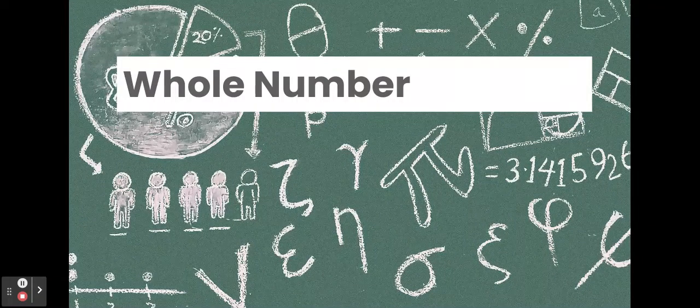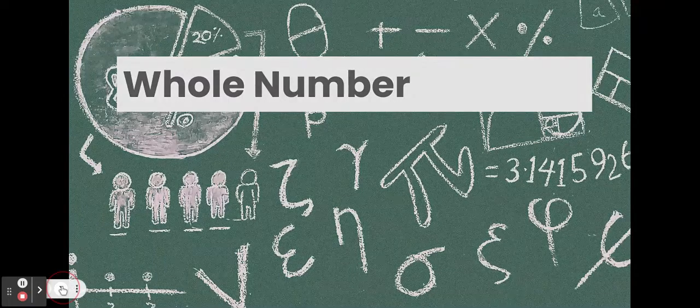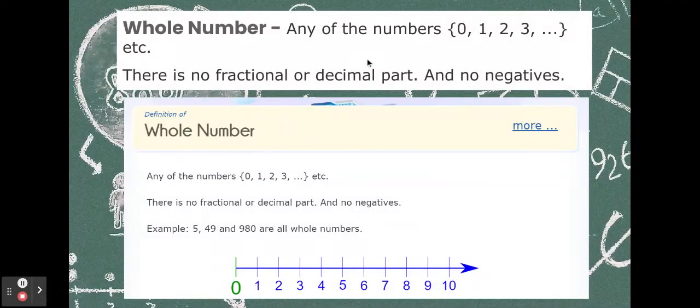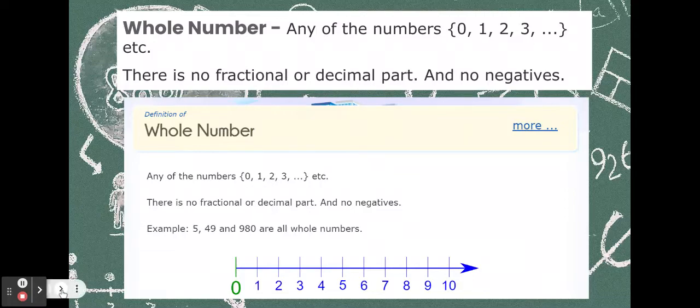First word that comes up, whole number. You're probably familiar with this. Let's dive a little bit more into it. A whole number is any of the numbers 0, 1, 2, 3. That is not a fraction, not a decimal, and not a negative. So, 0 to infinity, all positive numbers. That is a whole number.